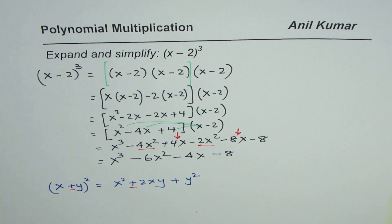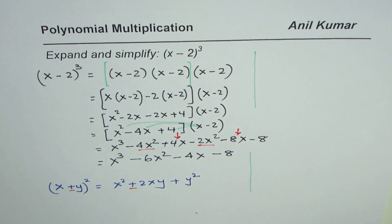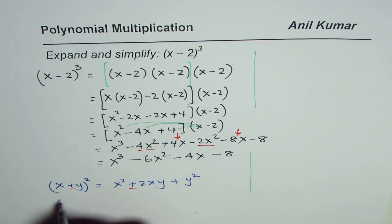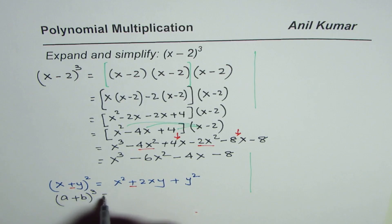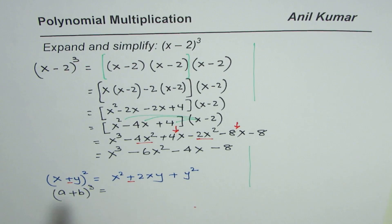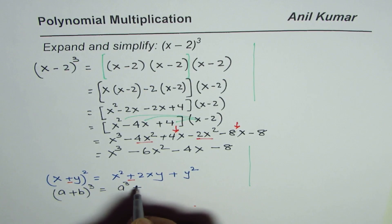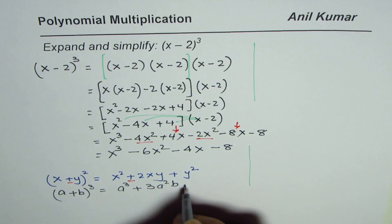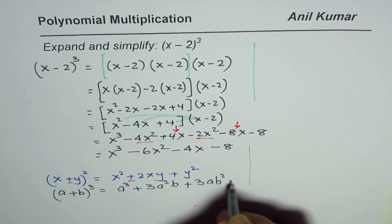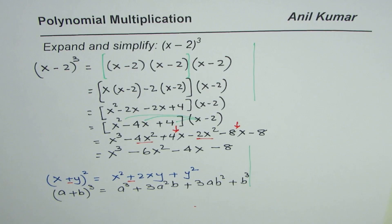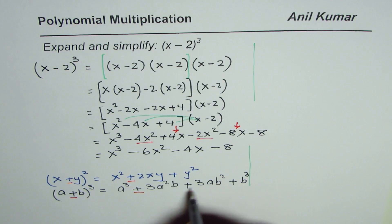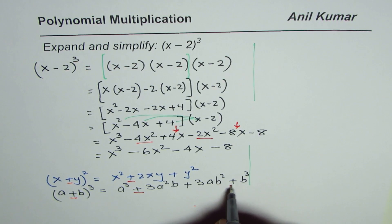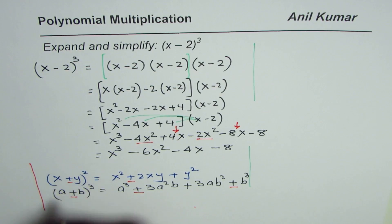So that is how we could actually expand. As an exercise, what you can do is find a general formula for a plus b whole cube. The formula is: a cube plus 3a square b plus 3ab square plus b cube. And in case we have negative b, so this will become negative. This is square, it will remain positive. Negative square is positive, but this will become negative. So that is the formula for cubes.